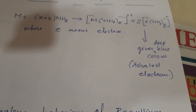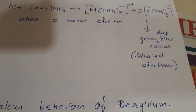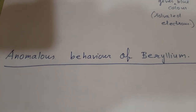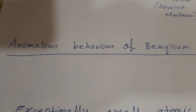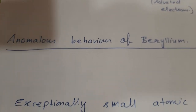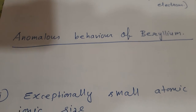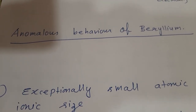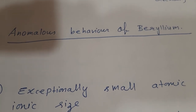The deep blue color is responsible for this compound. Then comes the anomalous behavior of beryllium. Beryllium does not resemble other elements of its group; rather, it exhibits a diagonal relationship with aluminium.